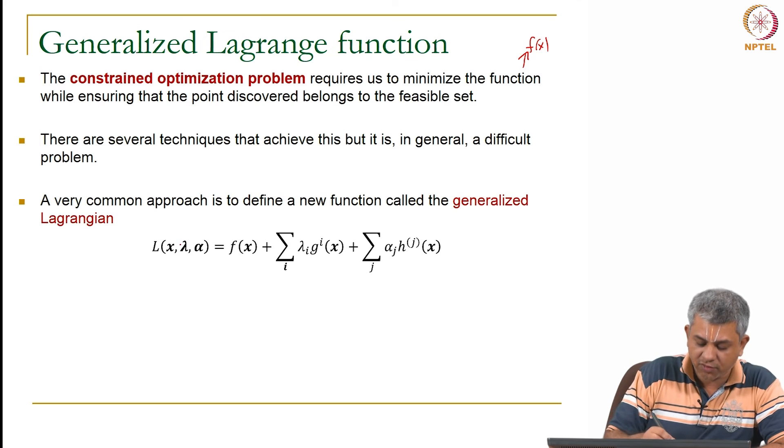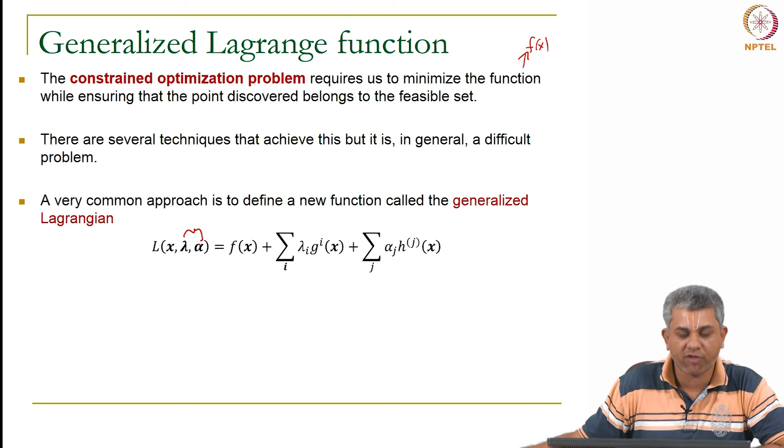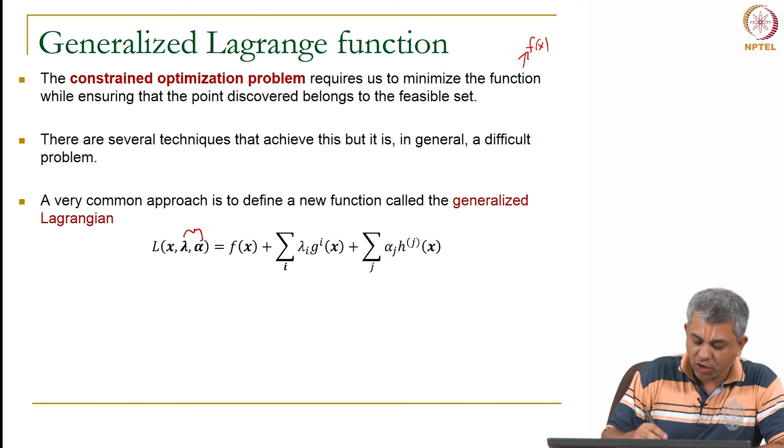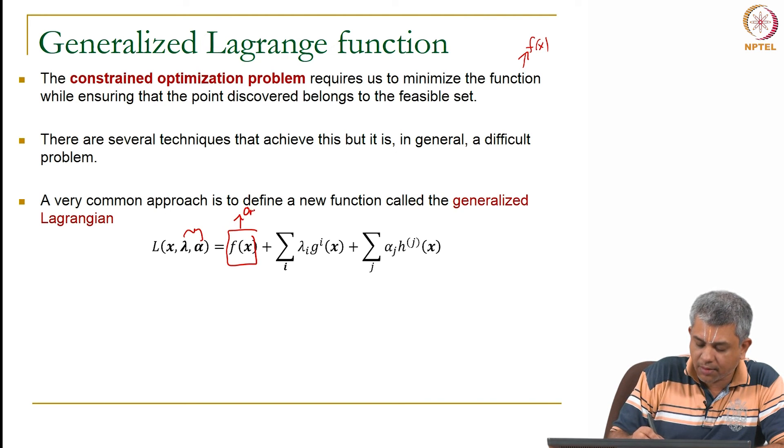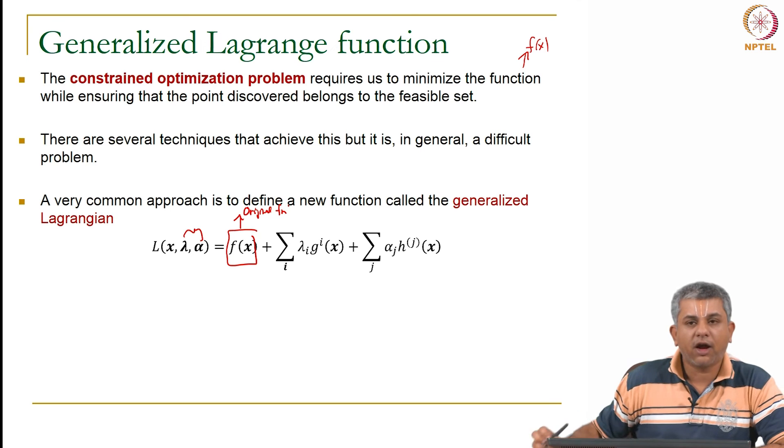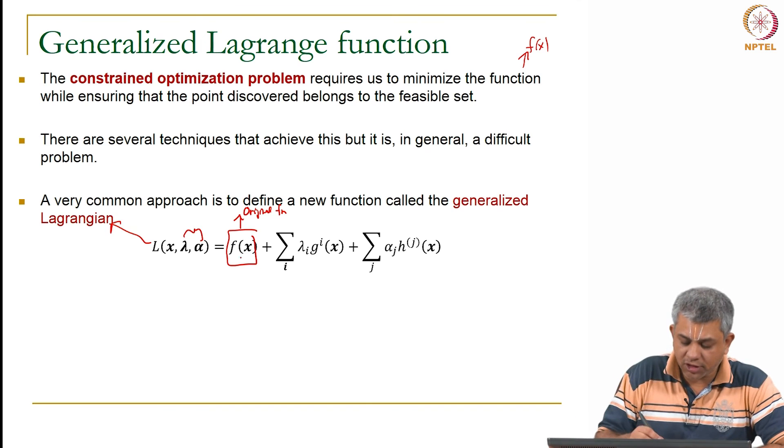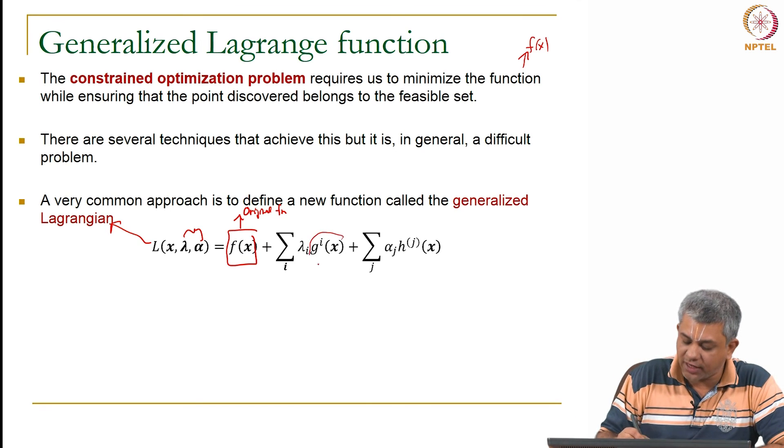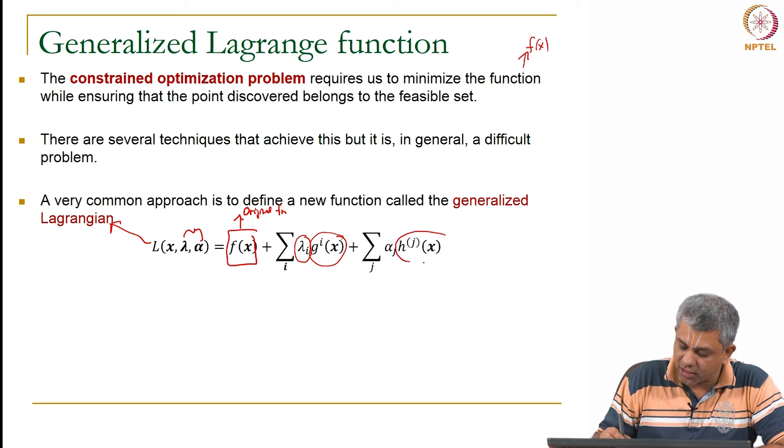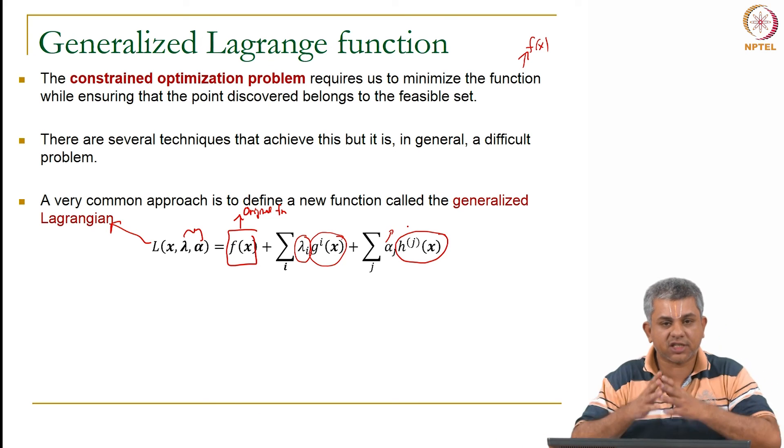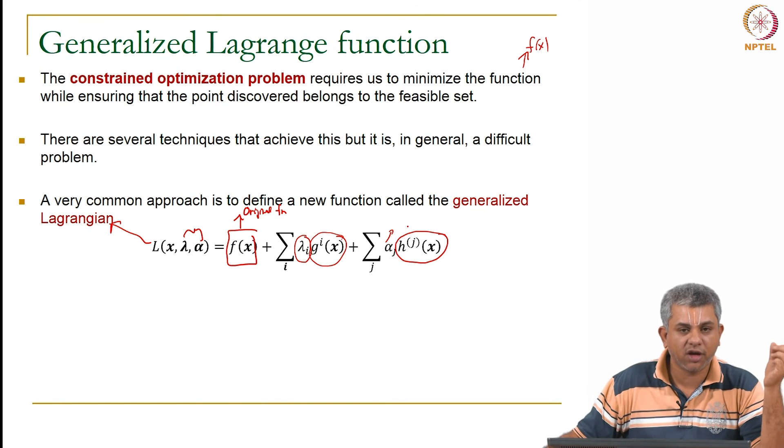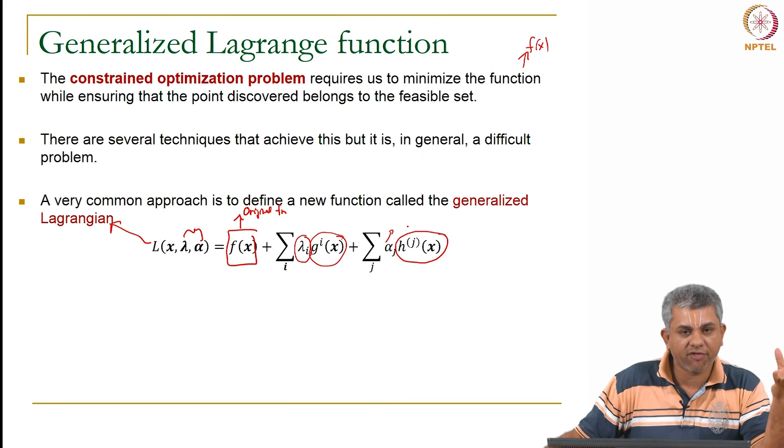So we add a couple of things. We add these two variables called lambda and alpha. Both are vectors. This was our original function and you create a new function called the Lagrangian L. This is the original function plus your equality functions multiplied by some arbitrary constant plus your inequality function multiplied by another arbitrary constant. So you just sum this up and make a giant new function called L which is f plus lambda times g plus alpha times h.